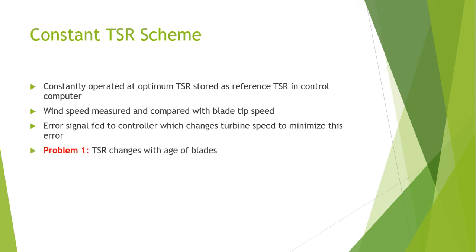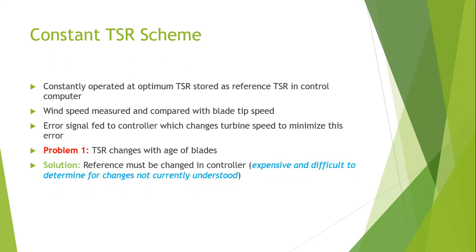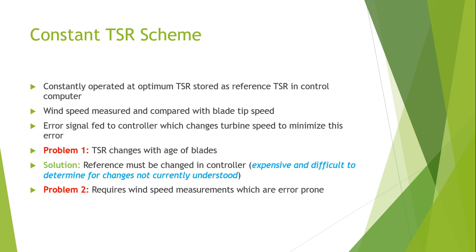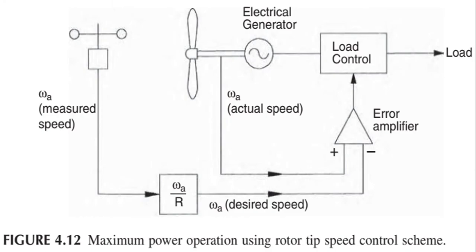The error signal is fed to the controller, which changes the turbine speed and minimizes this error. The problem with the constant TSR scheme is that the TSR changes with the age of the blade, and there is no mechanism to estimate how rapid changes over time will degrade the blade material and affect its TSR. Additionally, it requires wind speed measurement, and wind speed measurements are prone to errors, as discussed with the anemometer.